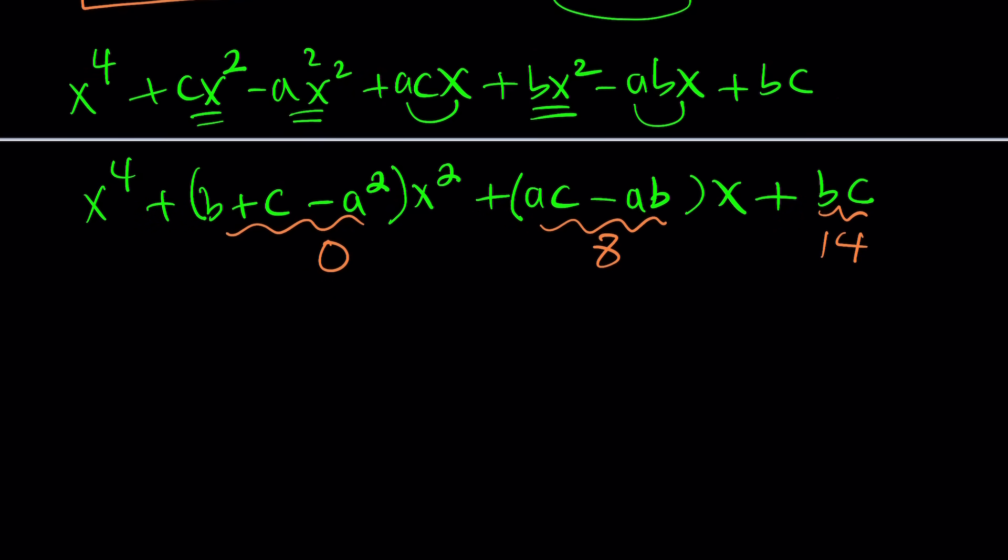From here, we get a system of equations which should be solvable, right? Well, wishful thinking. That's what I call it. But one of them is going to give us b plus c equals a squared. The second equation can be tweaked a little bit, factor out an a, and write this as c minus b equals eight.